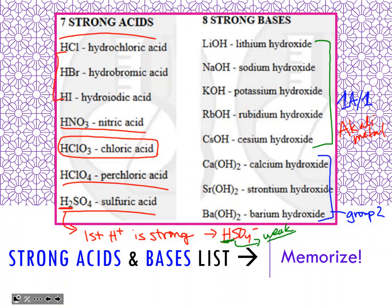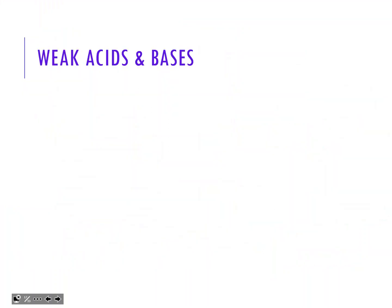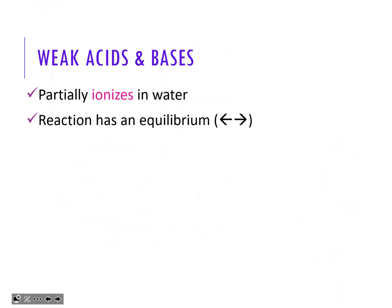Definitely get these memorized - you need to know all your strong acids and bases, because then anything else you see you can automatically put in the weak category and treat it with the weak rules. That brings us to weak acids and bases. They only partially ionize - less than 5% usually. The reaction has an equilibrium, and you'll see the double arrows with these because only a little bit actually turns into ions on the product side.